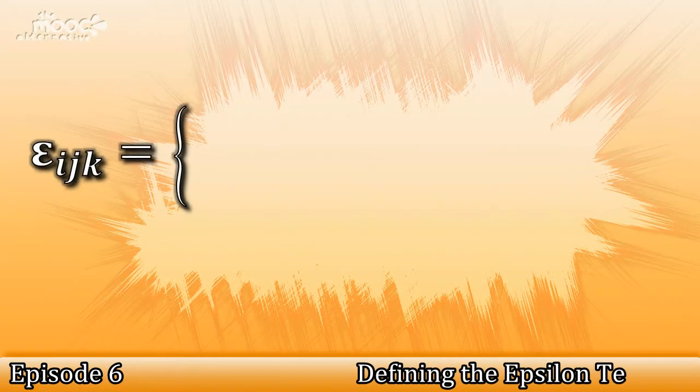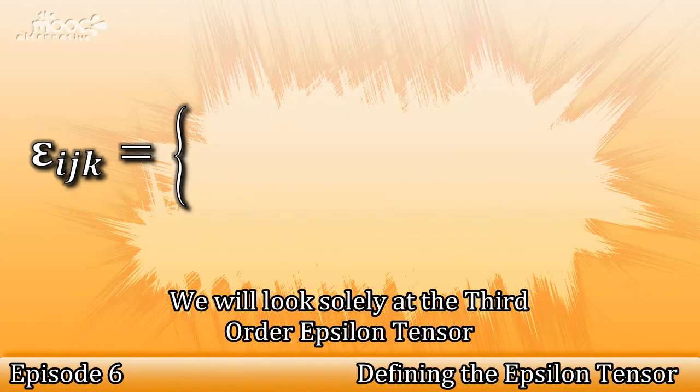The epsilon symbol looks like this. It's squiggly E, i, j, k. For this course, we will be looking expressly at the third order epsilon tensor, but do be warned, variants of other orders do exist.